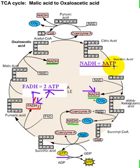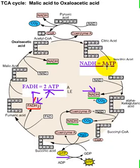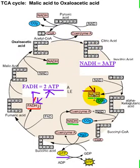1 NADH equals 3 ATP. One pyruvic acid going through the cycle produces 3 NADH — 1, 2, and 3. Each NADH equals 3 ATP, so altogether from one cycle, 9 ATP are produced from NADH: 3 from each of the 3 NADH. If the cycle turns 2 times — for both pyruvic acids — that gives 6 ATP from each NADH step, 6 from the next, and 6 from the last.